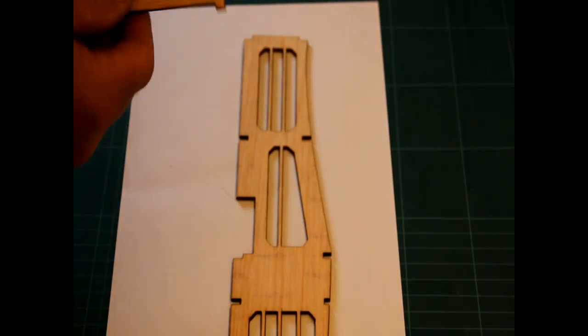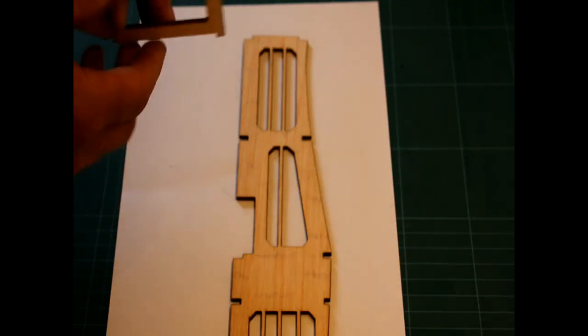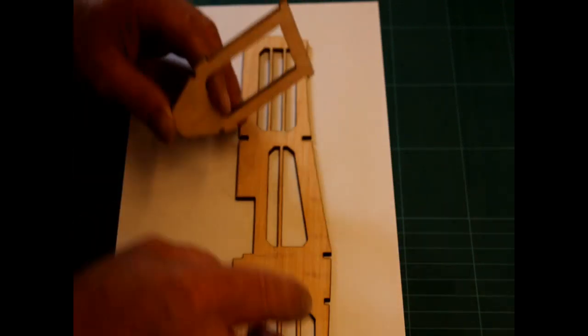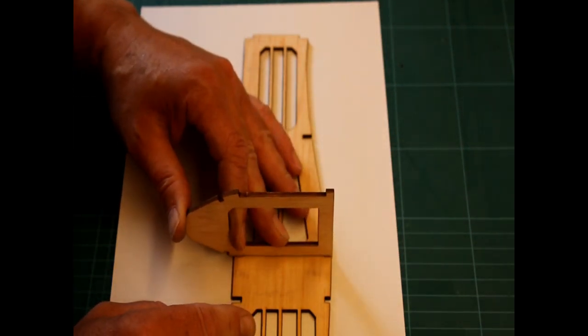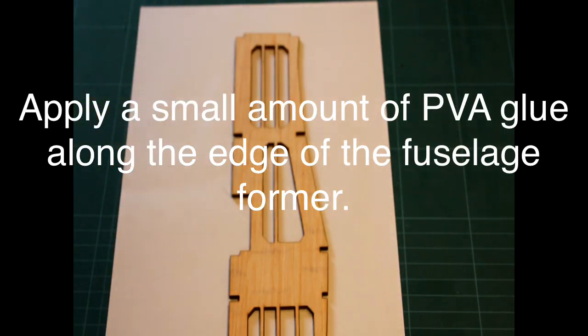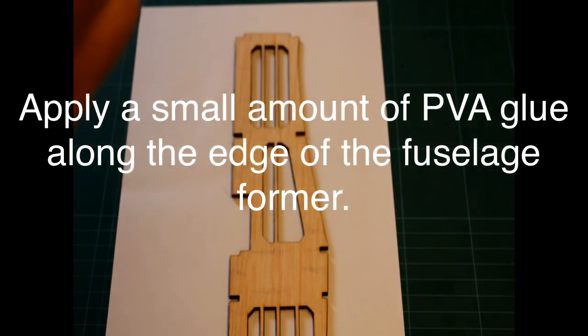Take the fuselage former and the fuselage former, making a note on the position where it needs to go. Just do a test fit and apply a little wood glue along the edge.